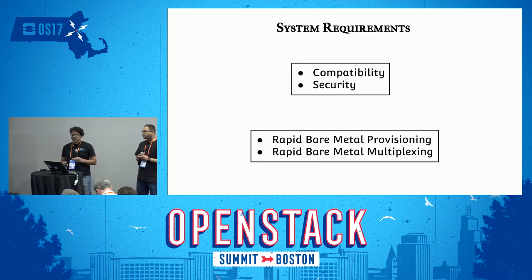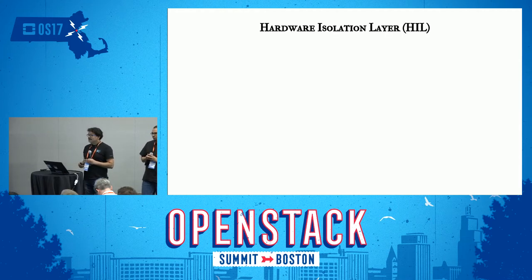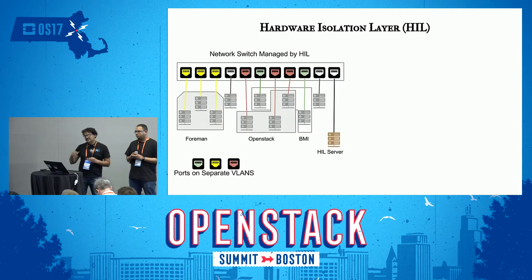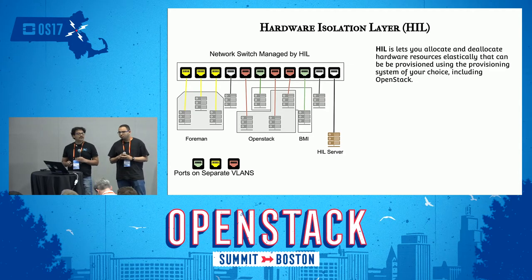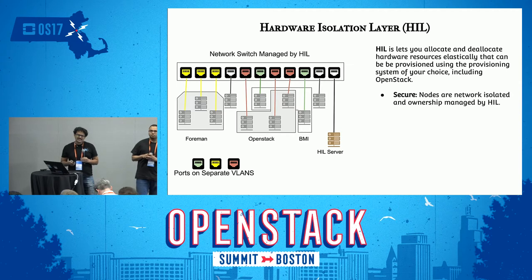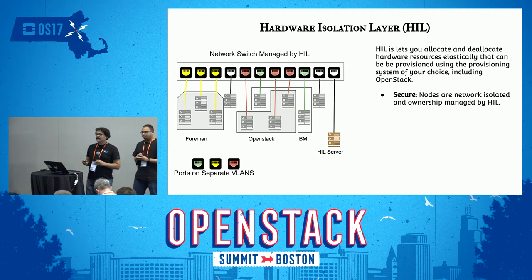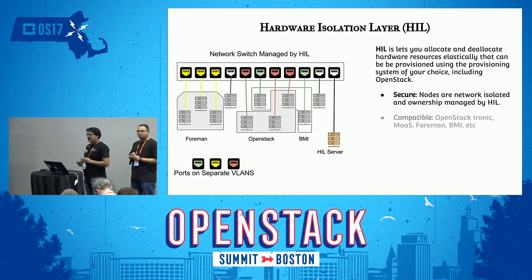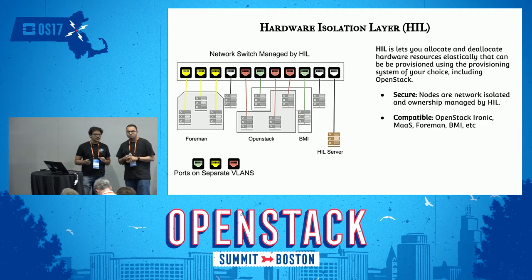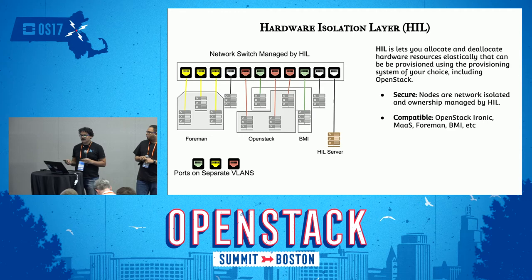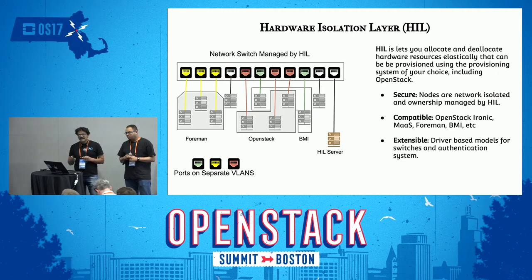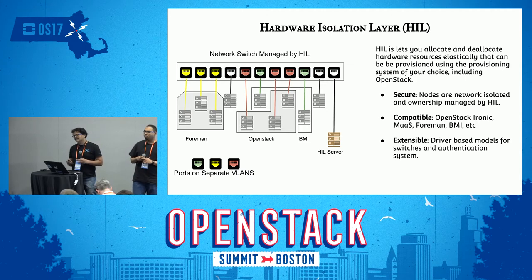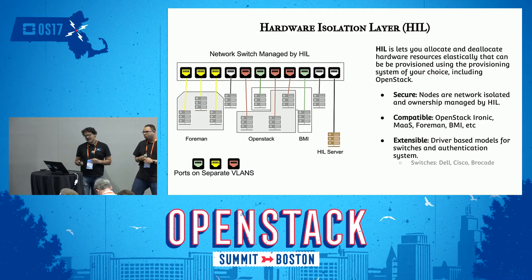To address these issues, we developed a system called Hardware Isolation Layer, or HIL. This layer sits between the bare metal systems and the provisioning systems, and it lets you move hardware between clusters very quickly. It is secure in the sense that nodes are on their own private network when you build your cluster, and authorization and authentication is managed by HIL. It is compatible with all provisioning systems — HIL does not prescribe what provisioning system you use. You can use any provisioning system you want and get native performance with no performance cost. HIL itself has only 3,000 lines of core code. It is extensible via a driver model, with drivers for various switches including Dell, Cisco, and Brocade, and we are working on additional drivers.